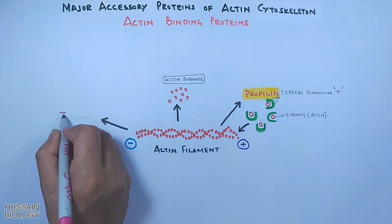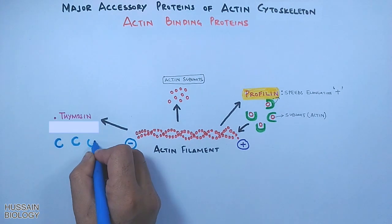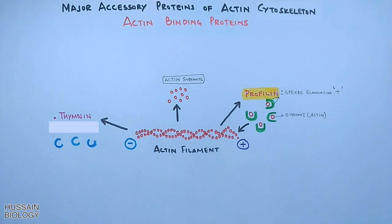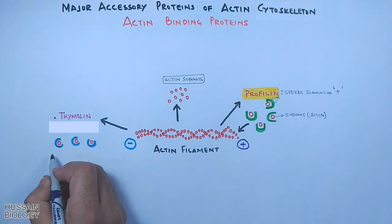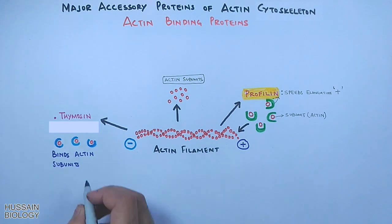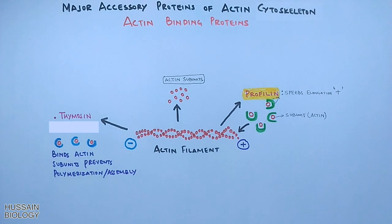Then we have thymosin. Thymosin also binds the actin subunits — it binds to the actin-ATP monomers — but this protein prevents polymerization of actin subunits. So we can say thymosin is an inhibitory protein for growing the actin filament.